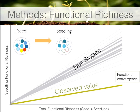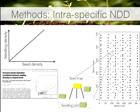In addition to this functional approach, we also wanted to evaluate the importance of con-specific negative density dependence. We performed the same type of analysis — comparing changes in density from seed to seedling — but now applied to the 120 stations in the Puerto Rican forest.